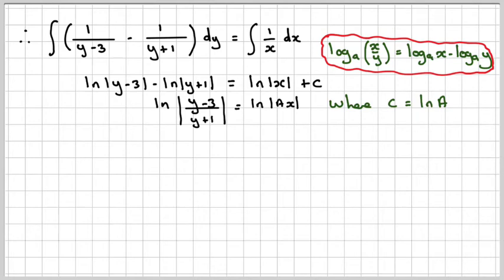We can now remove the logarithm from both sides. So we've got (y - 3)/(y + 1) = ax. We need to make y the subject. So y - 3 = axy + ax.